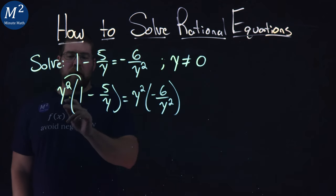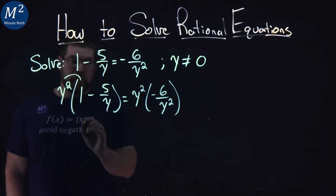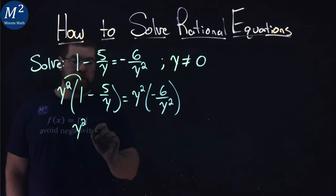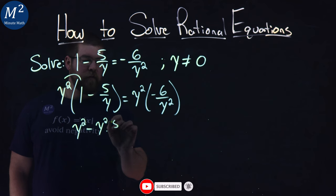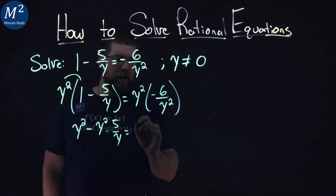From there, multiplying that out, y squared times 1 is y squared minus y squared times 5y. I'll just write it out here for right now so we can see. And we have y squared times negative 6 over y squared. You can write it as a fraction there.